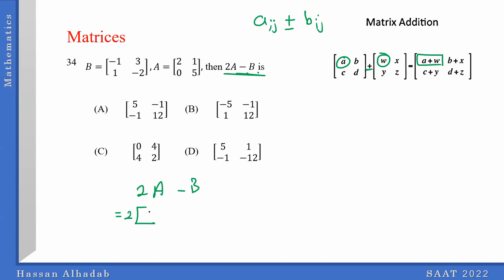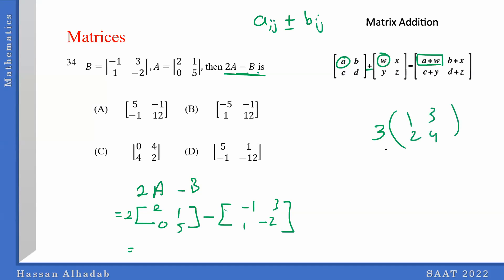This is going to be 2a, which is matrix a: 2, 0, 1, 5, minus b, which is negative 1, 1, negative 2, 3. When you multiply a number with a matrix, you multiply the number with all elements of the matrix. So 3 times the matrix [1,2,3,4] gives you [3,9,6,12]. So for this one, 2a gives you 4, 0, 2, 10.